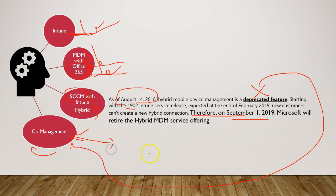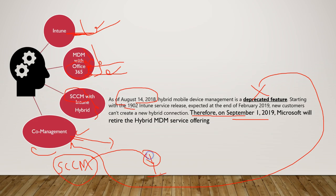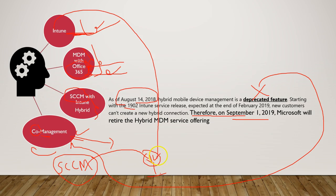Co-management means you have a device — it could be a Mac device, a mobile device, or any device. From the SCCM server, there is an agent called the SCCM client installed on the device. Also from Intune, there is another agent inside that same device. That means you are co-managing — inviting two different management capabilities into that device. If a feature is supported by Intune but not SCCM, you benefit from co-management.